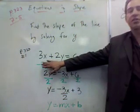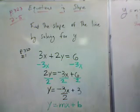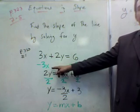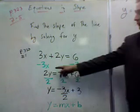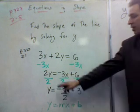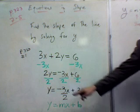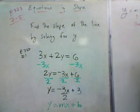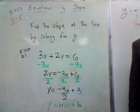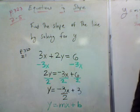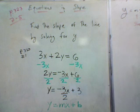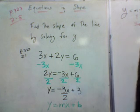You're given the equation 3x plus 2y equals 6. As you can see on the board here on your screen, we went ahead and solved for y. We subtracted 3x on both sides. We got 2y equals negative 3x plus 6. We divided by 2, and we got y equals negative 3 over 2x plus 3. Why did we do that? Why did we solve for y? The reason we solved for y is because it puts this equation in the form y equals mx plus b, where m is the slope and b is the y-intercept.